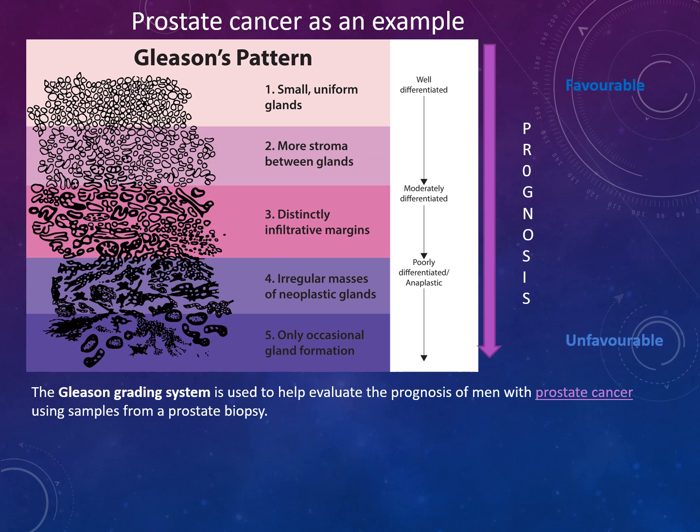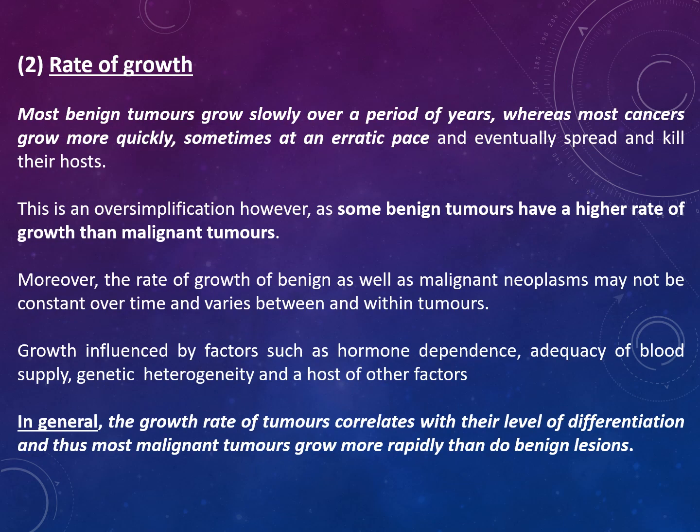An example is prostate cancer, which uses the Gleason grading system to evaluate prognosis using samples from a prostate biopsy. This is incorporated into a strategy of prostate cancer staging to predict prognosis and guide therapy. A Gleason score is given based on microscopic appearance — cancers with a high Gleason score are more aggressive and have a worse prognosis.